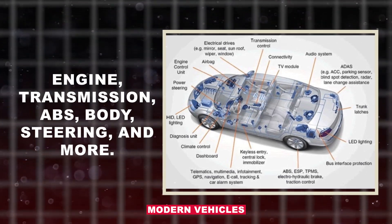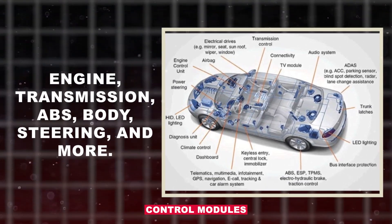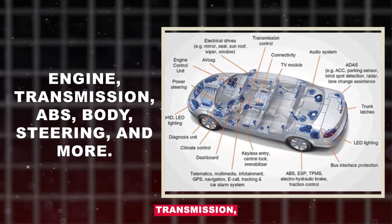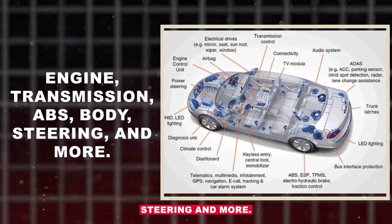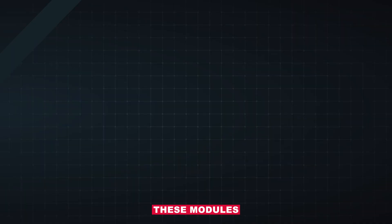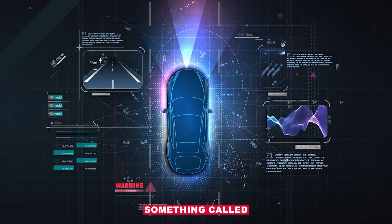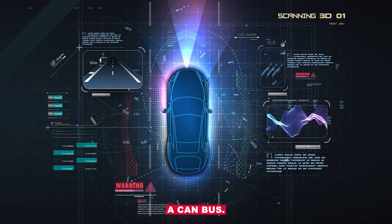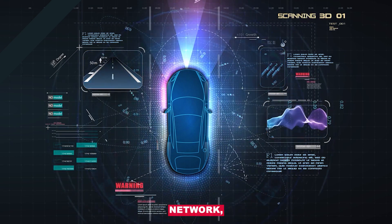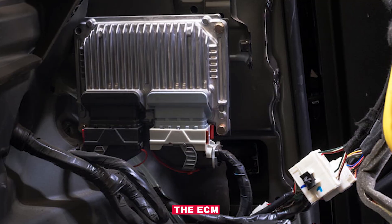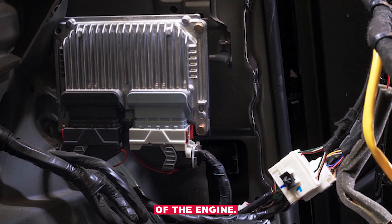Modern vehicles run on a complex network of control modules — engine, transmission, ABS, body, steering, and more. These modules constantly talk to each other over something called a CAN bus, the vehicle's internal communication network. The ECM, or PCM, is like the brain of the engine.